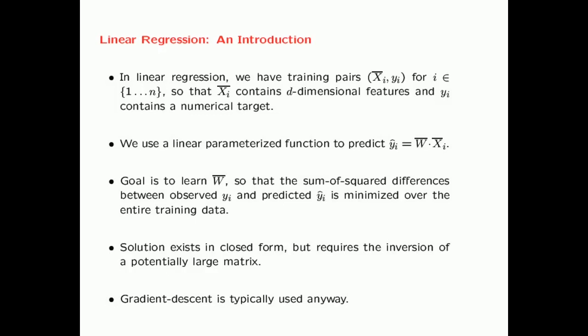Let us first introduce linear regression. In linear regression we have training pairs (xi, yi), where each xi is the i-th training point, a d-dimensional vector, and yi is a numerical target that can take on any real value. We use a linear parameterized function to predict yi as a dot product of a parameter vector and the i-th training instance. We need to learn this weight vector so that the sum of squared differences between the observed yi and the predicted value is minimized over the entire training data — essentially a sum of squares loss function.